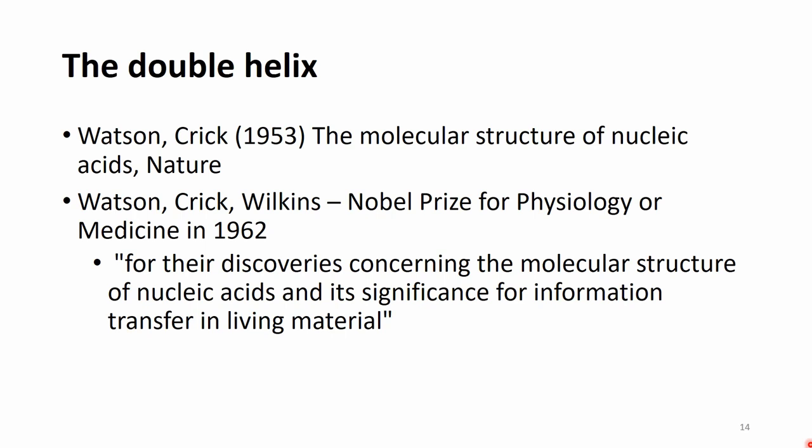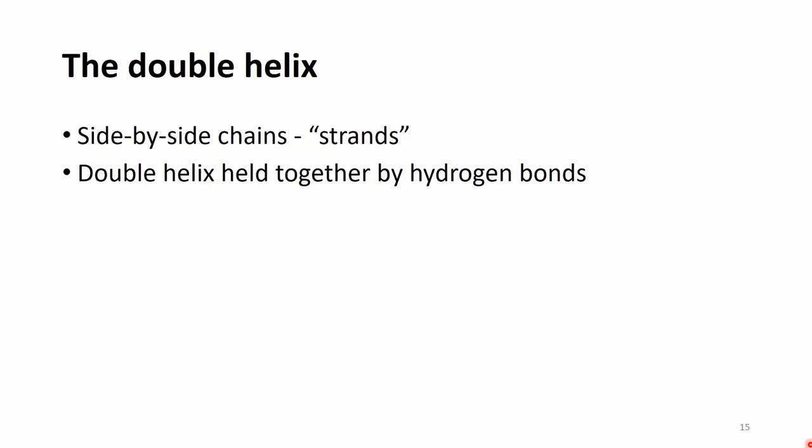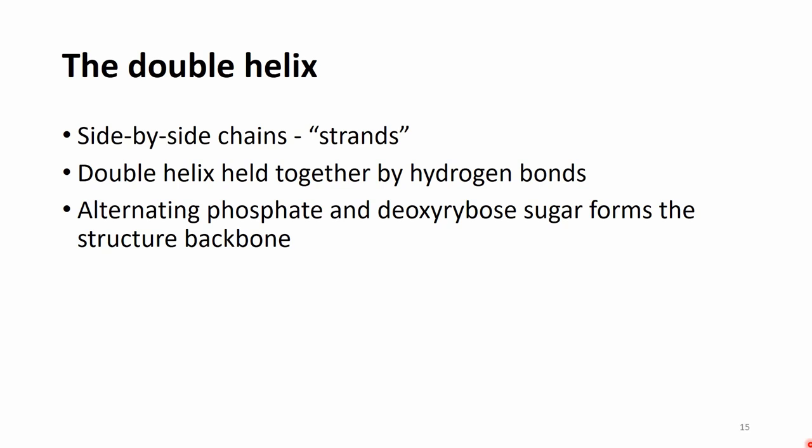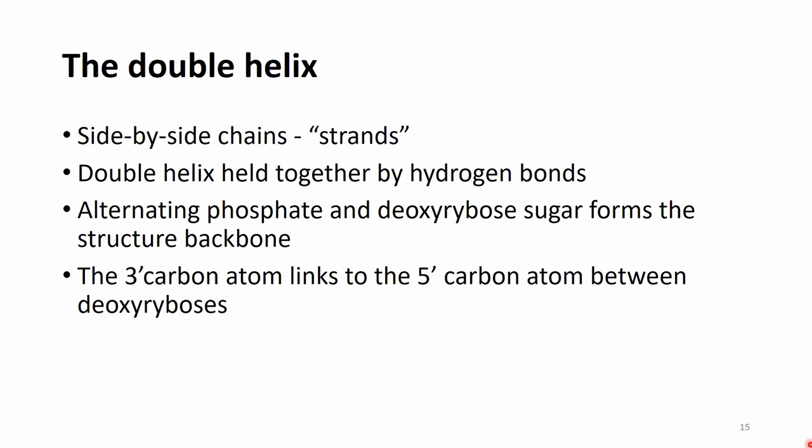The double helix, or DNA, consists of side-by-side chains called strands. This double helix is held together by hydrogen bonds. The alternating phosphate and deoxyribose sugar forms the structural backbone, and the three-prime carbon atom links to the five-prime carbon atom between the deoxyriboses, giving it a so-called anti-parallel structure.